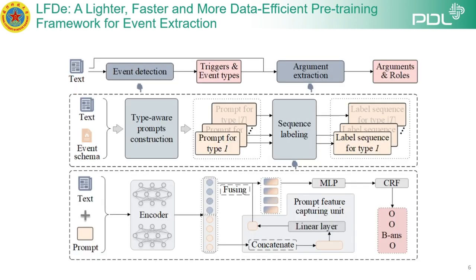The event extraction model we propose follows a two-stage structure. First, it detects events, then it extracts event arguments. The same neural network is used for both stages, but with different prompts. The model generates a type-aware prompt for every type in the event schema and then extracts the triggers or arguments from the sentence for each event type or argument role.